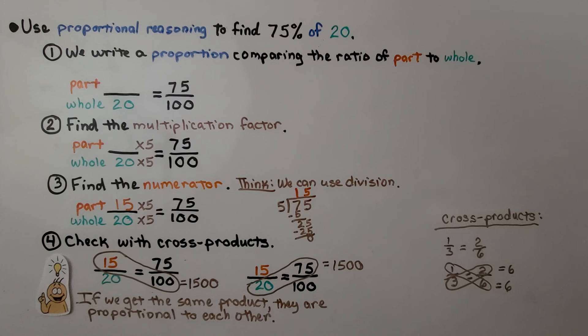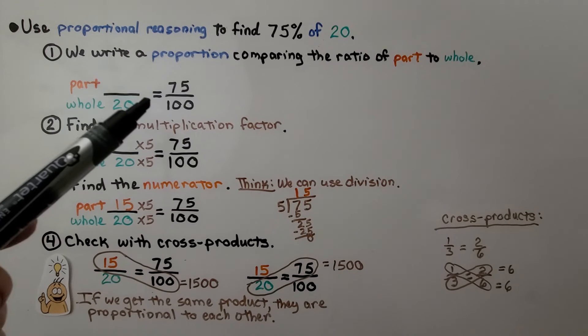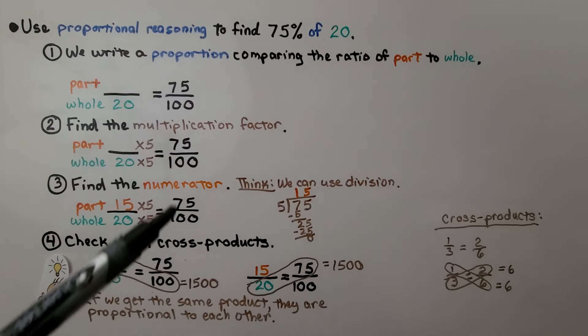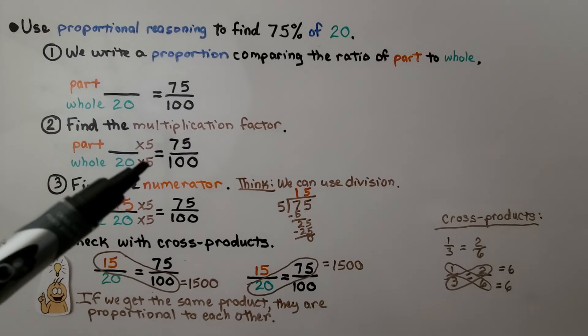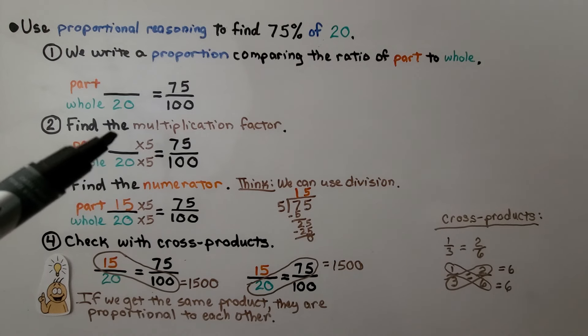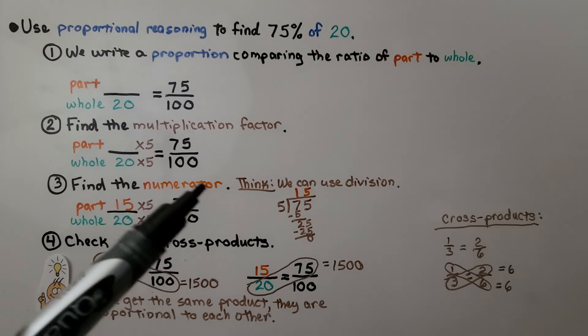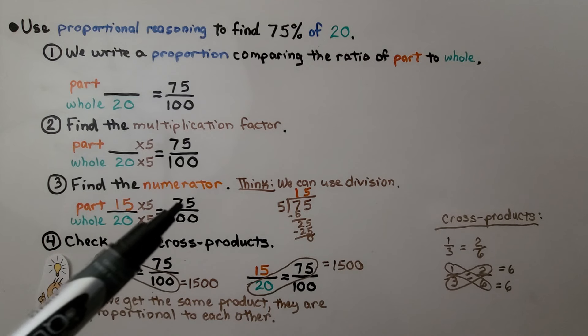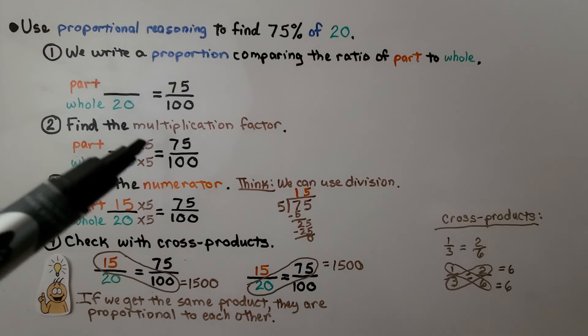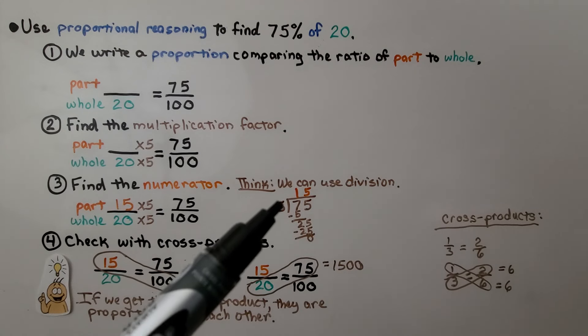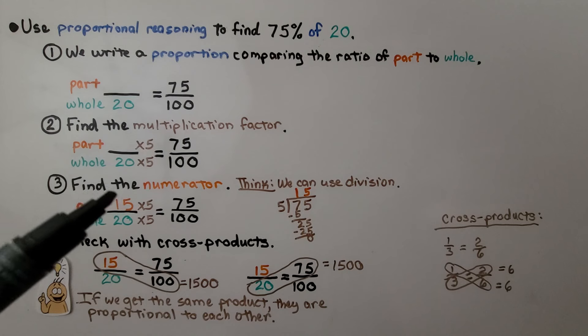Here's another example of using proportional reasoning. We need to find 75% of 20. We write a proportion comparing the ratio of part to whole. We're looking for the part. And we can say something over 20 is equal to 75 over 100. We find the multiplication factor. 20 times 5 is equal to 100, so this needs to be multiplied by 5 to equal 75. We find the numerator, and if you think division is the opposite, it's the inverse of multiplication. So to find something times 5 to equal 75, we can do 75 divided by 5. That's going to give us a 15. We know the part is 15.